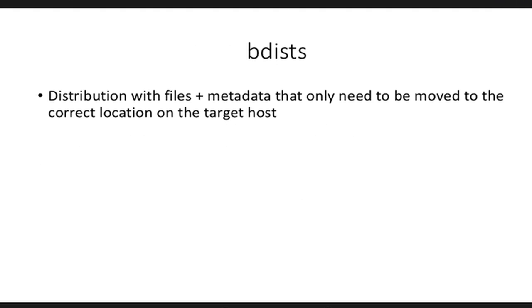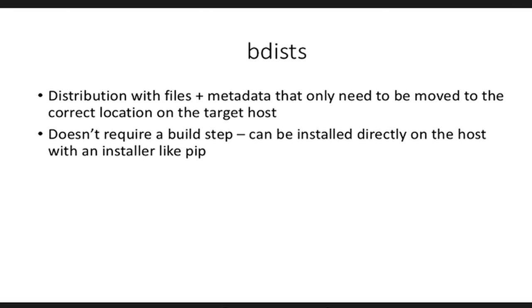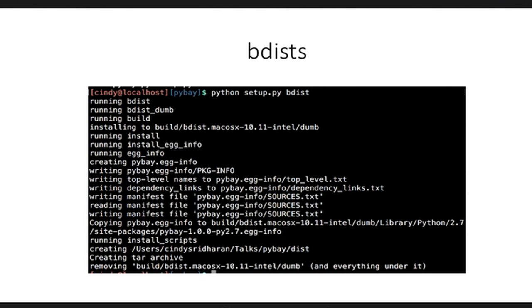Now let's look at bdists — binary distributions. These are essentially distributions which just have files and metadata; they don't contain all your Python source code. All that needs to be done when installing a binary distribution is move all these files to the right location on my file system and it's ready to be imported. It doesn't require a build step and can directly be installed on the host — moved to the right position in the file system so that the Python interpreter knows to grab it from that location. To generate bdists: just run python setup.py bdist.